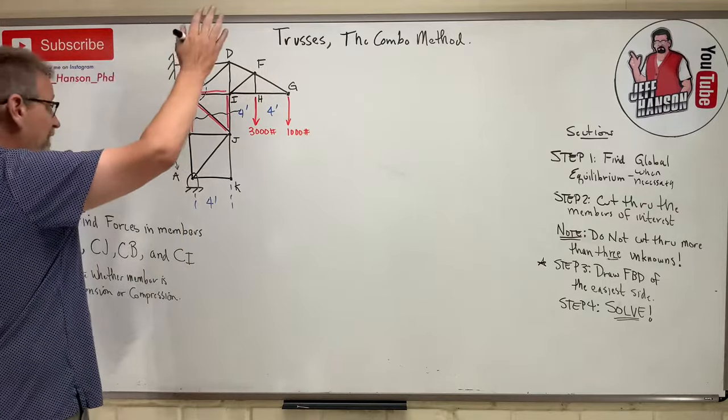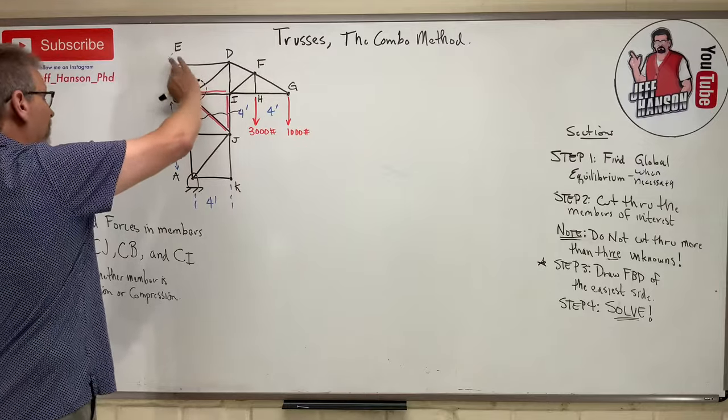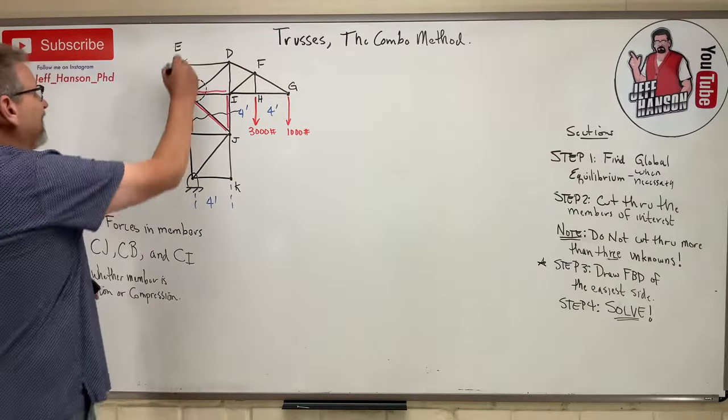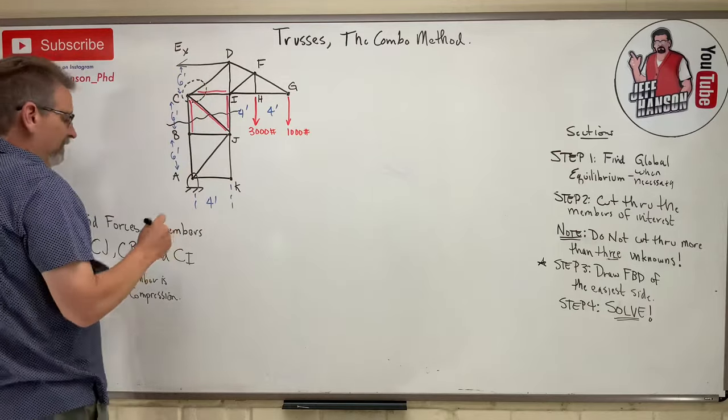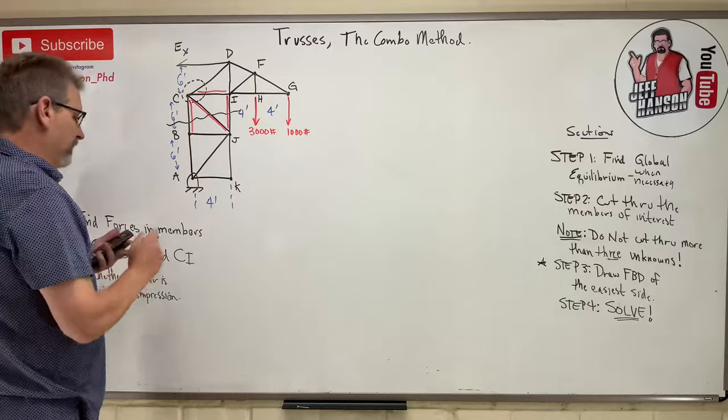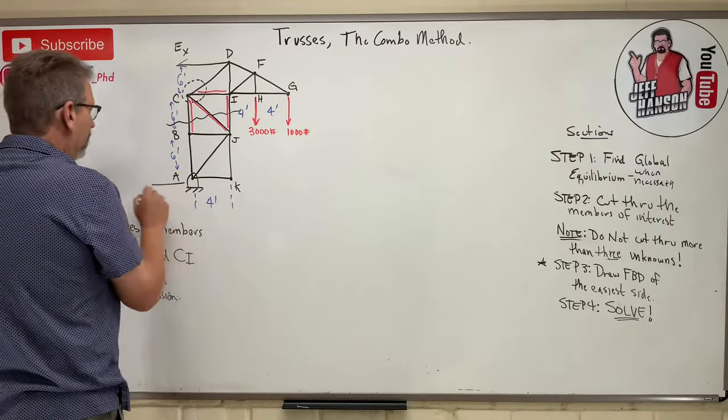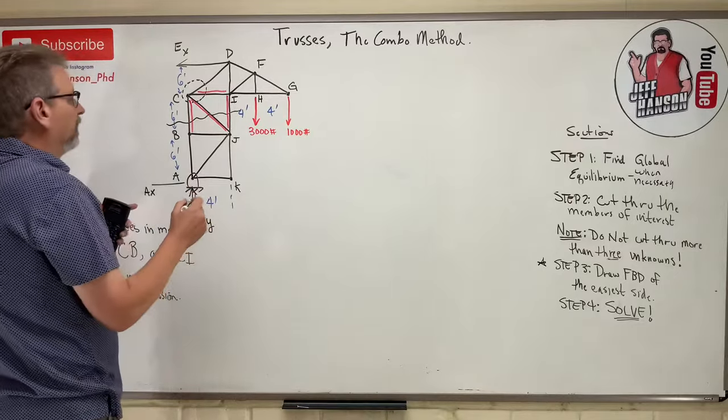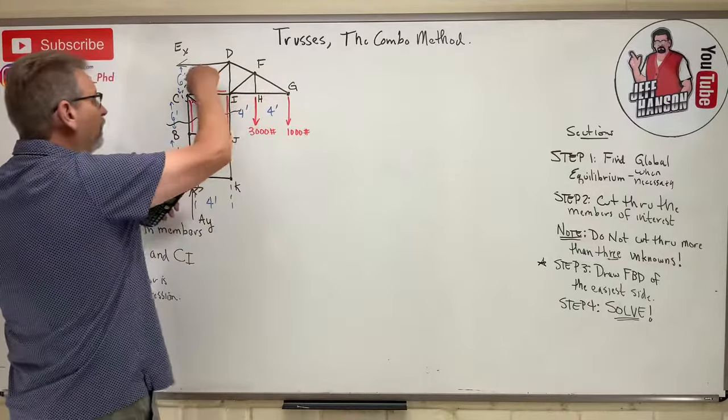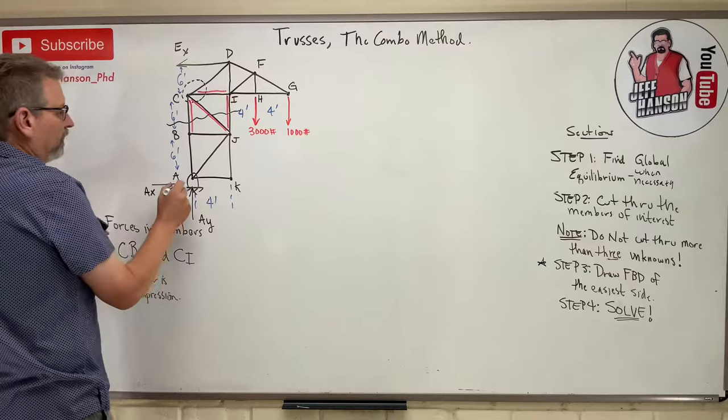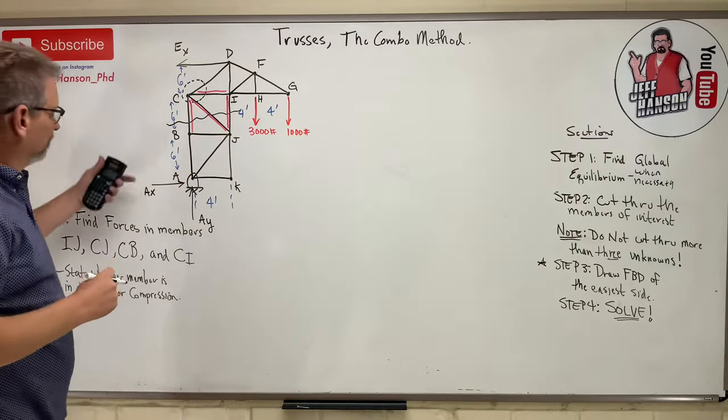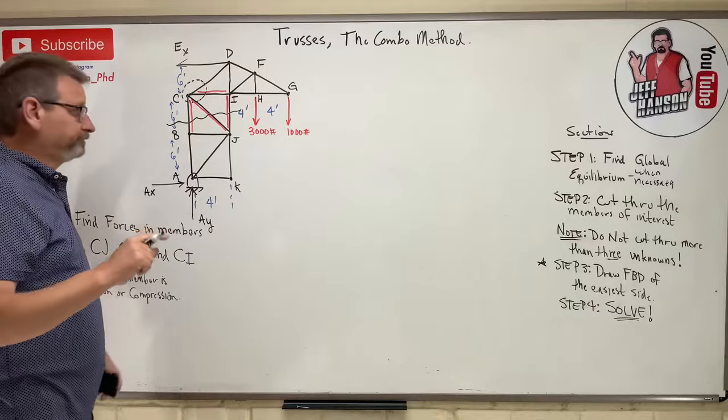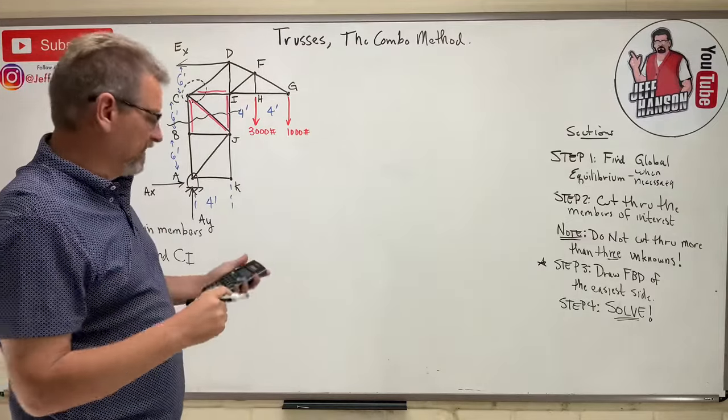This is the recipe for the sections part. The recipe for method of joints is very similar, except we don't cut through the members of interest. We just isolate a joint. We can only cut through two members for the method of joints versus three for the method of sections, and then we draw the free body of the joint and then solve it. So I think what we'll do here is, number one, start off with, can you find global equilibrium? So a lot of people are like, well, I don't know what that is. Is that a pin connection? Forget about what it is. Watch this. It's a two-force member.